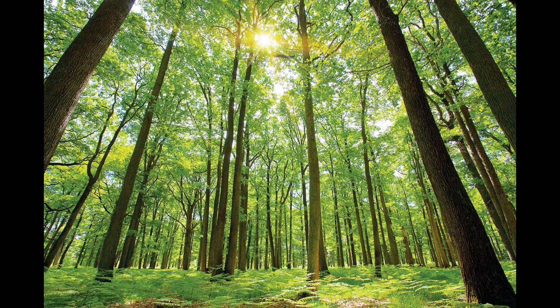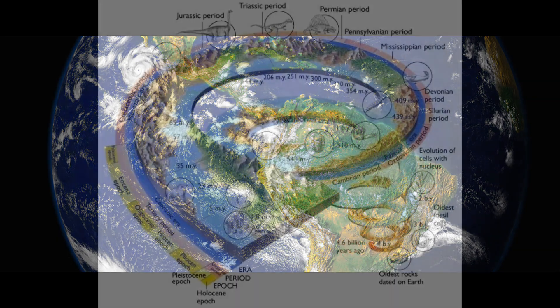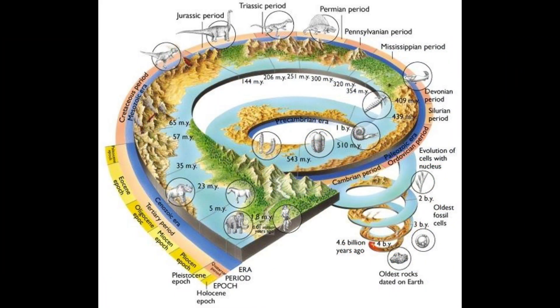Life has existed on Earth for billions of years. You might take this fact for granted, but it is remarkable that the chain of life has never been severed. The life that exists now on Earth is the result of billions of years of chaotic forces acting upon it.